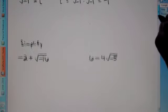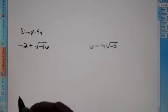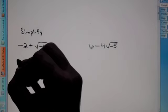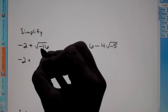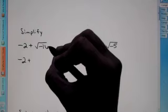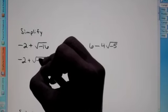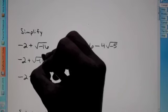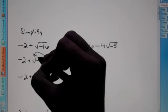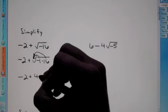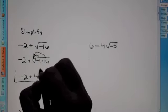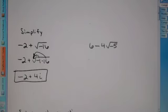Let's get to some problems. Our first problem says simplify negative two plus root negative sixteen. We can break up root negative sixteen to be the square root of negative one times sixteen. When we take the square root of sixteen, that becomes a four, and the square root of negative one is i. Since these are not like terms, this would be your final answer. You cannot combine the negative two and the four because one has an i and one does not.